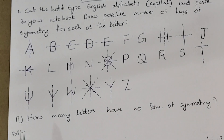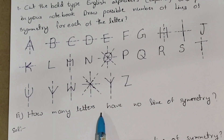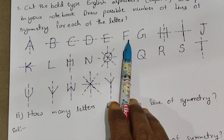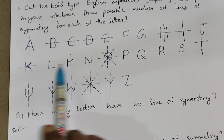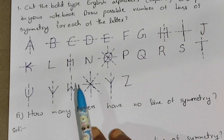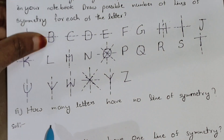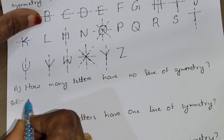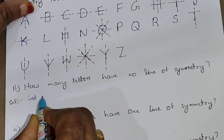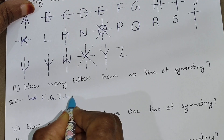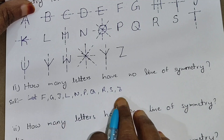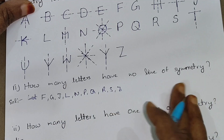First sub-question: how many letters have no line of symmetry? The letters with no symmetry line are: F, G, J, L, N, P, Q, R, S, Z. These letters have no line of symmetry.